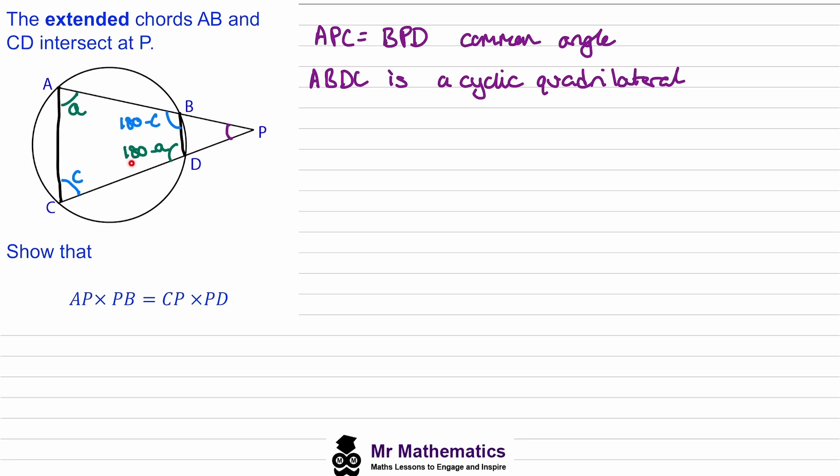So if this angle is 180 minus A, then this angle would be 180 take away this, so just A. And the same is true for the angle at B—this would just be C. So again, we've proven that the two triangles have the same three angles.